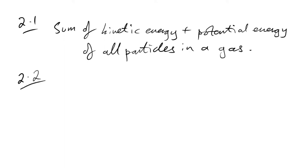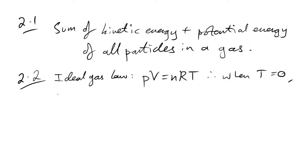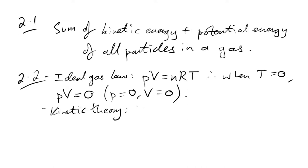Question 2.2: absolute zero. Using the ideal gas law PV = nRT (or NkT): when T = 0, PV = 0, so P = 0 and V = 0. From kinetic theory, kinetic energy of a particle = (3/2)kT, so when T = 0, Eₖ = 0.